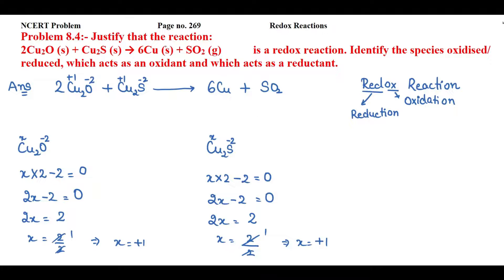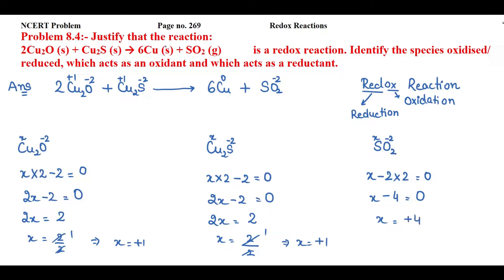Any element in its atomic or molecular state carries 0 oxidation state, so the oxidation state of elemental copper is 0. For sulfur dioxide (SO₂), oxygen's electronegativity is more than sulfur, so oxygen is −2. Assuming sulfur is x: x + (−2 × 2) = 0, so x − 4 = 0, meaning the oxidation state of sulfur in SO₂ is +4.